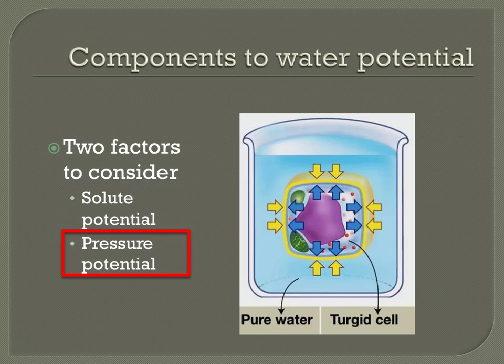Second, there is pressure potential. Pressure potential takes into account the differences in pressure inside and outside of the cell. If you filled up a balloon with air by breathing into it, the pressure inside might be much higher than on the outside of the balloon. Given a week or two, what you would expect is the balloon would shrink in size due to the difference in pressure, and gases would eventually escape from the inside. When plant cells use central vacuoles to increase the pressure against the inside of their cell walls, there is a significant pressure potential.